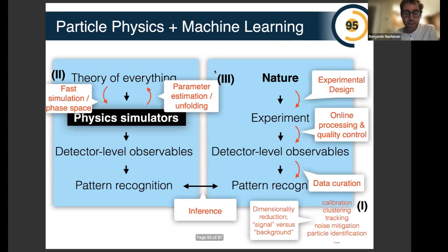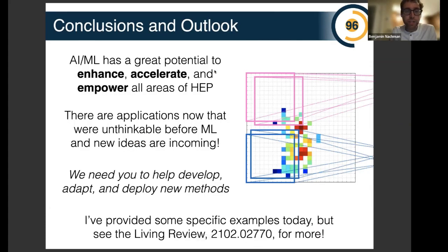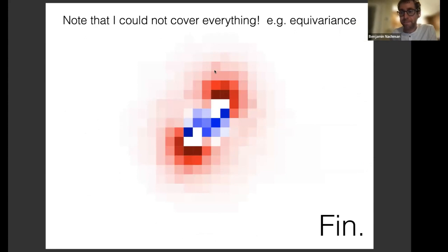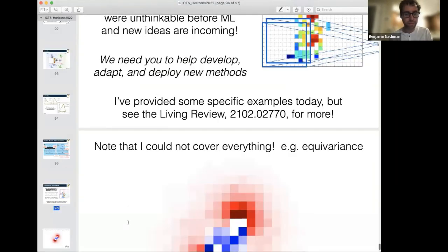I covered a lot of ground in very little time, trying to give you a sense of the breadth and depth of machine learning for high energy physics, giving some specific examples. I hope I've made it clear that these tools have great potential to further the science of high energy physics across frontiers. There are applications now that were basically unthinkable before the deep learning revolution, and new ideas are still coming in very fast. We need everyone's help to develop and deploy these methods. If you want to see a comprehensive list of applications, there's a living review that continuously grows with time.